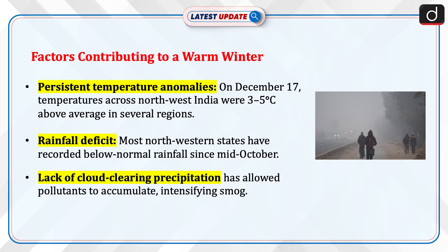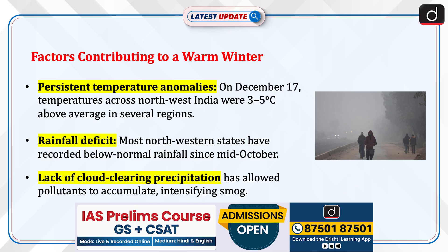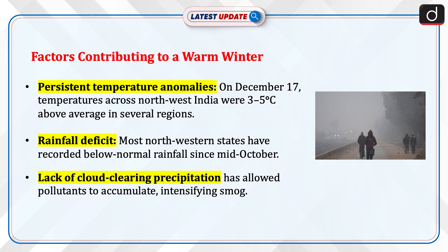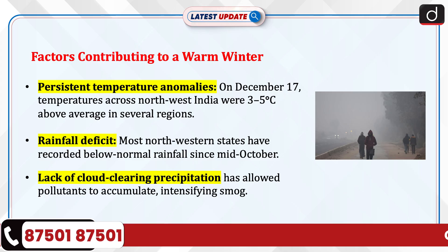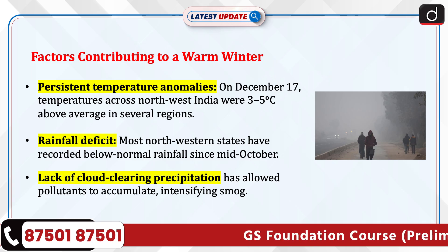Now let's discuss the factors contributing to a warm winter. Persistent temperature anomalies: on December 17, temperatures across northwest India were 3 to 5 degrees Celsius above average in several regions. Rainfall deficit: most northwestern states have recorded below-normal rainfall since mid-October. Lack of cloud-clearing precipitation has allowed pollutants to accumulate, intensifying smog.